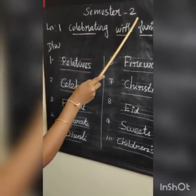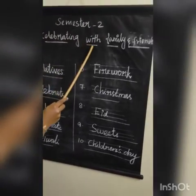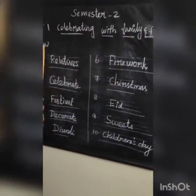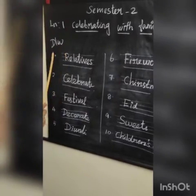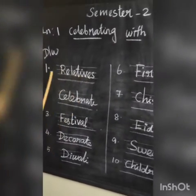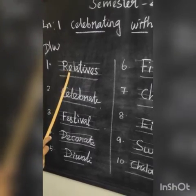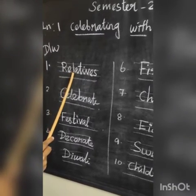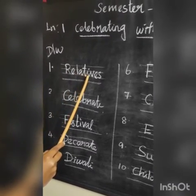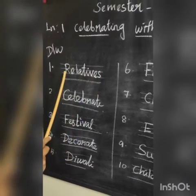Semester 2, Lesson 1 - Celebrating with Family and Friends. Dictation. 1st one: Relatives. R-E-L-A-T-I-V-E-S. Relatives.